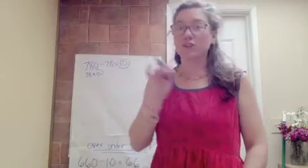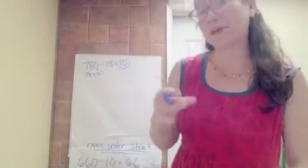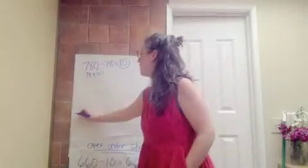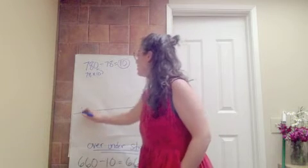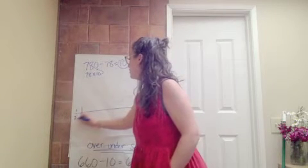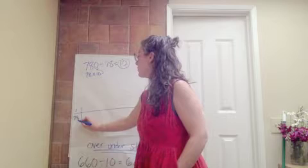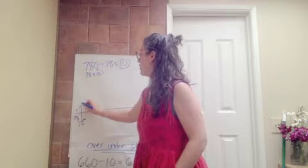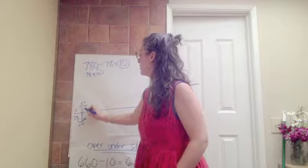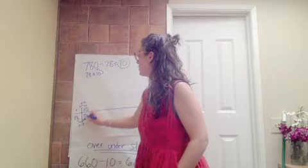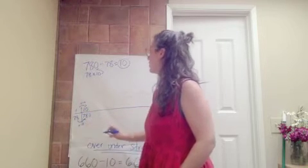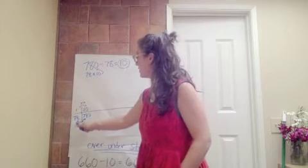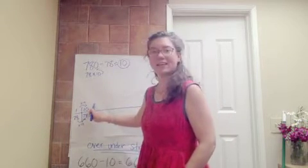Since we know that, just like we did before, we're going to use that to build on it with our ratio table to see what we can do. So, 78 times 10, 1 times 10. We know that 780 divided by 78 is going to get us 10.